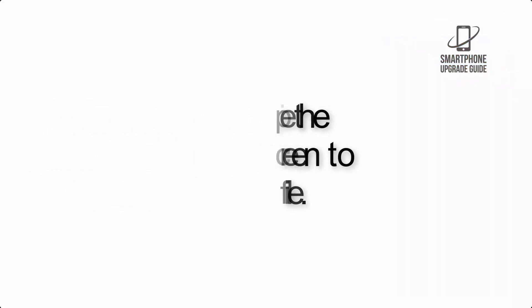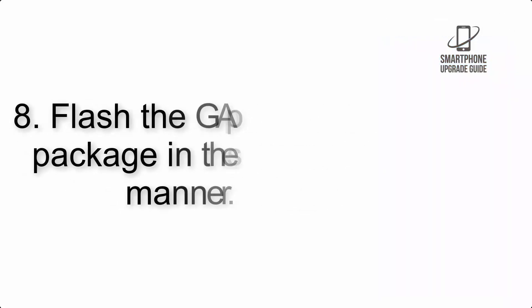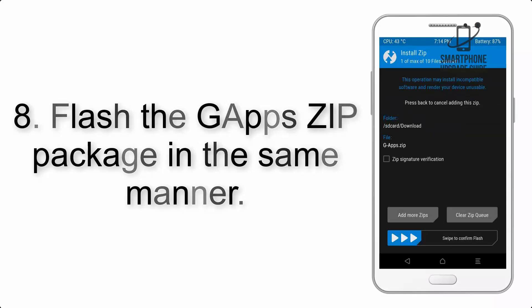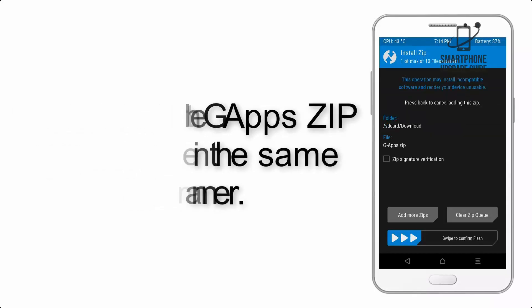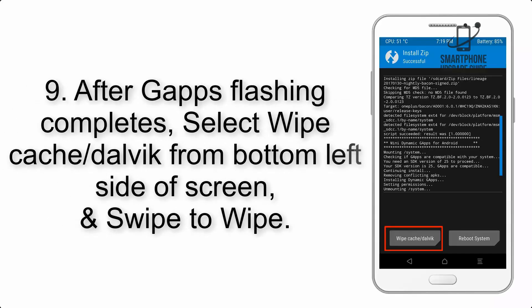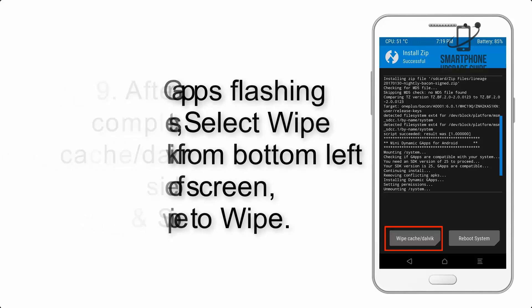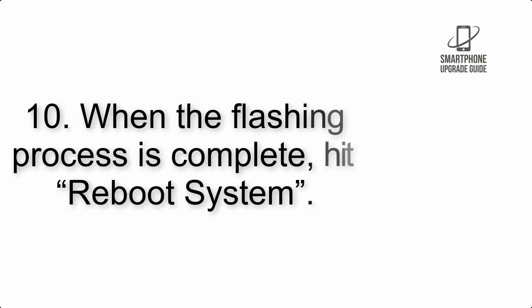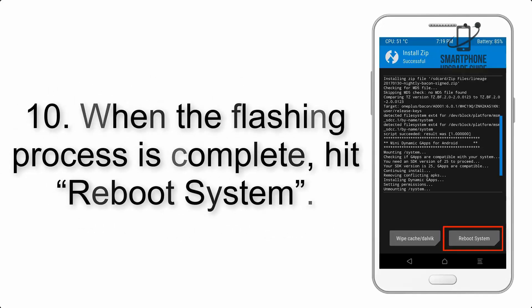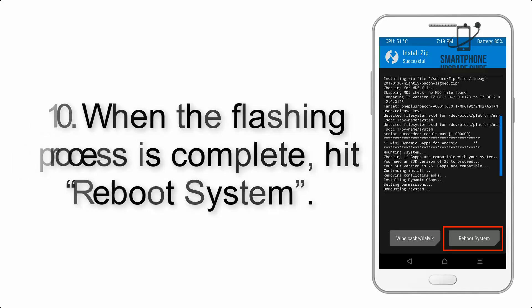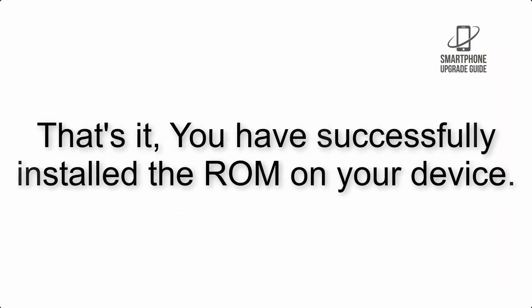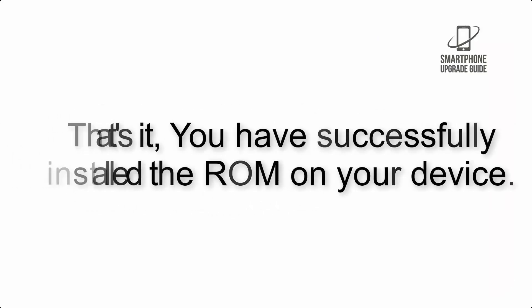Step 8: Flash the GApps zip package in the same manner. Step 9: After GApps flashing completes, select Wipe Cache and Dalvik from the bottom left side of the screen and swipe to wipe. Step 10: When the flashing process is complete, hit Reboot System. That's it — you have successfully installed the ROM on your device.